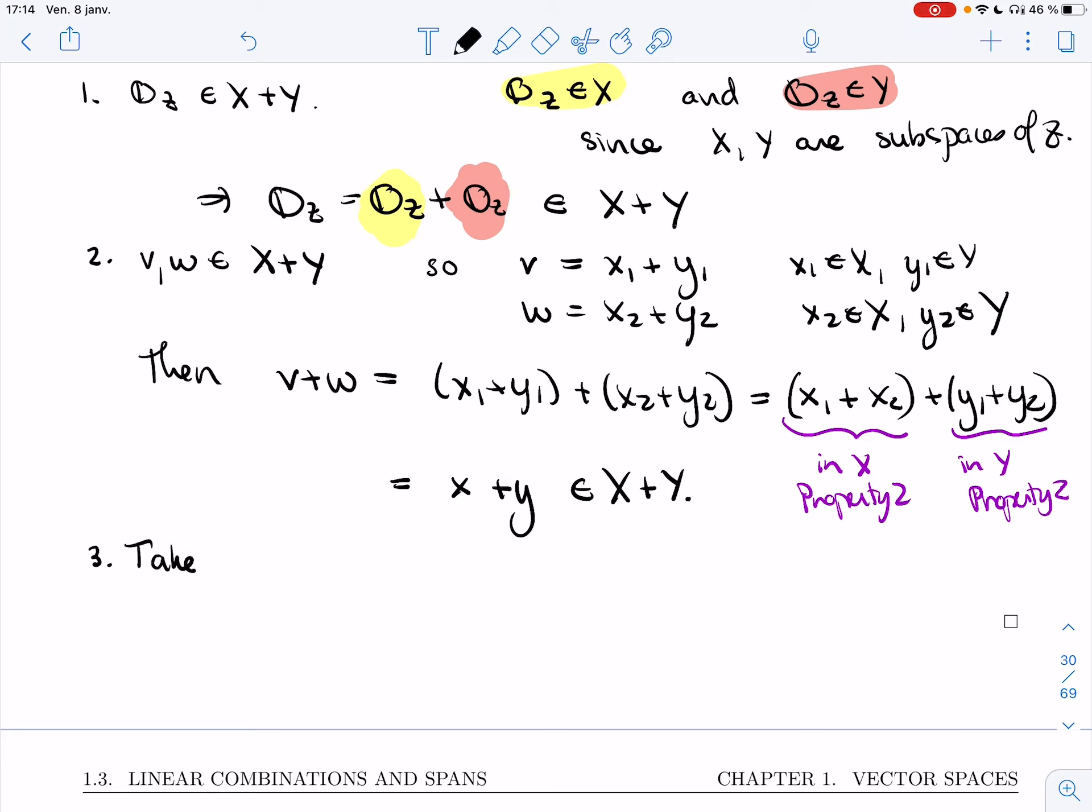Final one. Let me take some v, which is x1 plus y1 in X plus Y. Let's take k in R. Then k times v is k times (x1 plus y1), which is k times x1 plus k times y1. Each part is still in their respective vector spaces. This is in X by property 3. This is in Y by property 3. So this is still some x plus some y, and so it is in X plus Y.